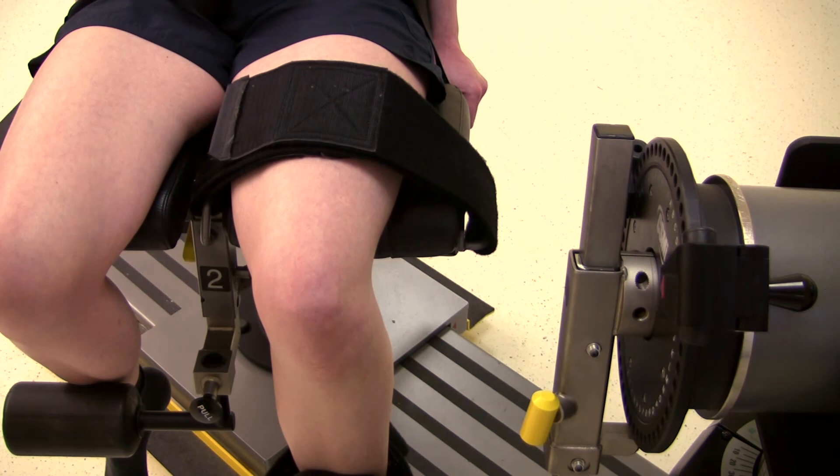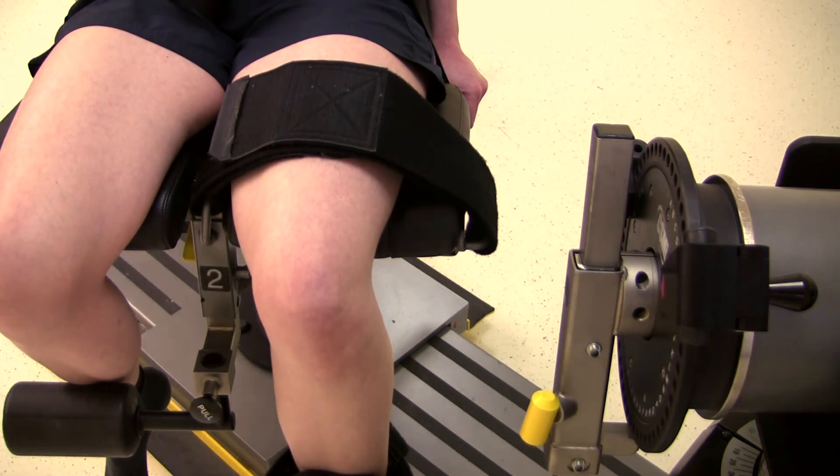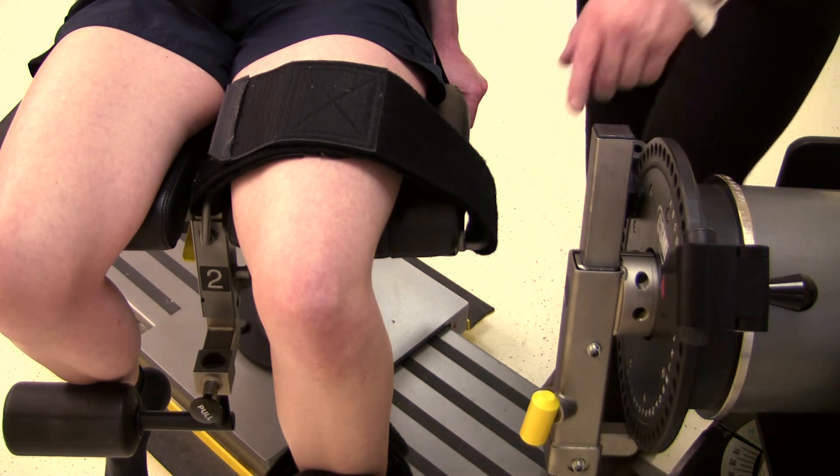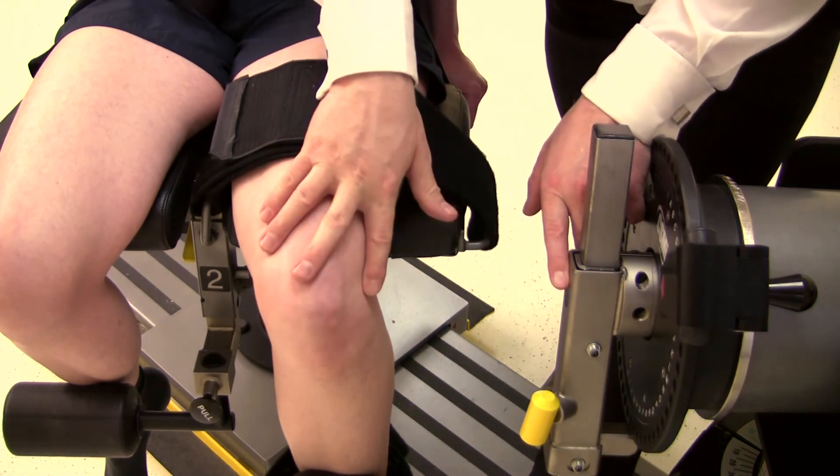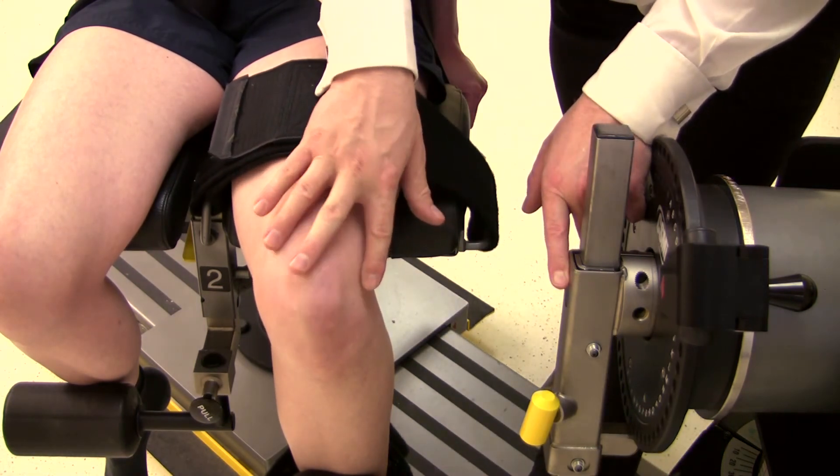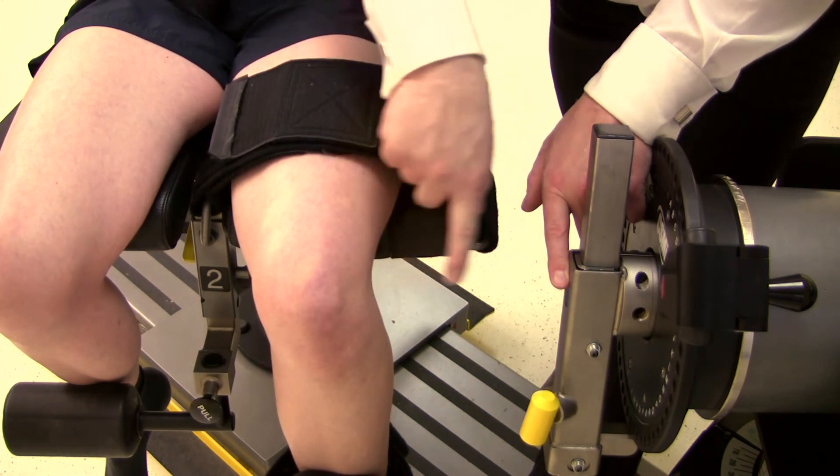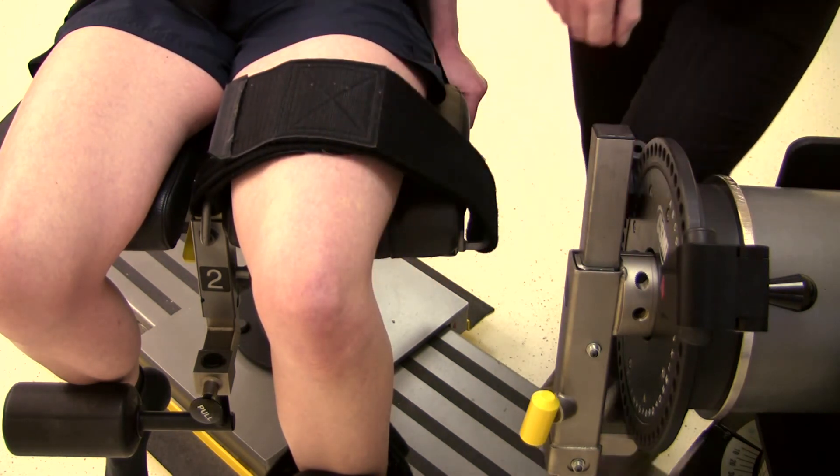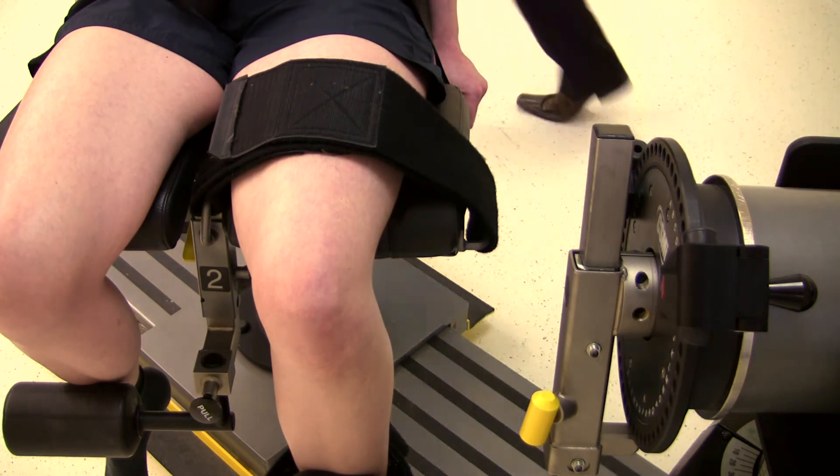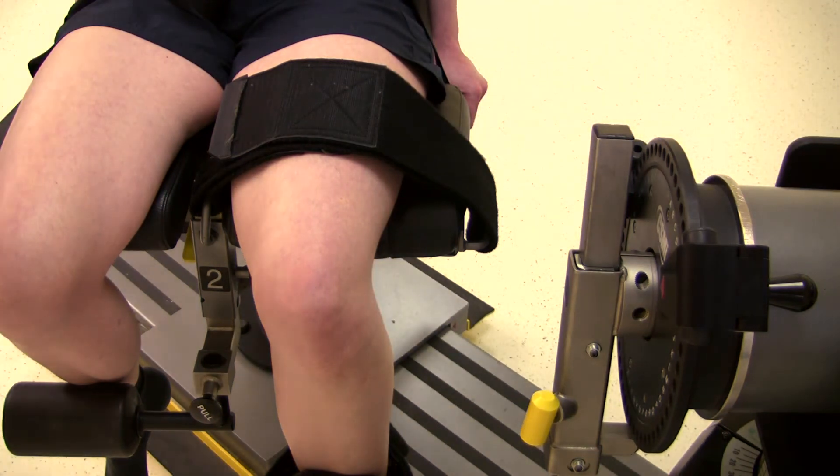Now the axis of rotation needs to be set. The axis for the joint needs to be directly opposite the black dot on the input arm. The axis of rotation for the knee is the lateral femoral condyle, or the lateral joint line. The chair foreaft and the dynamometer height may need adjustment to achieve the alignment.